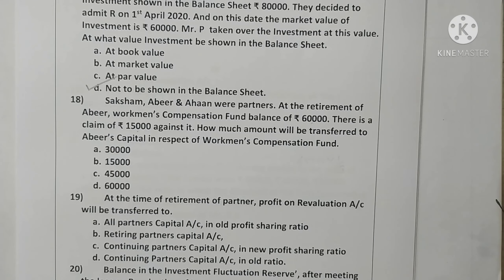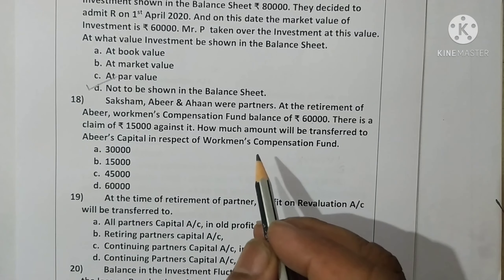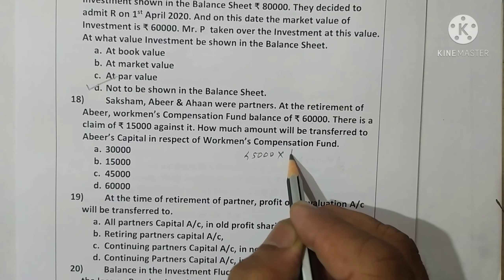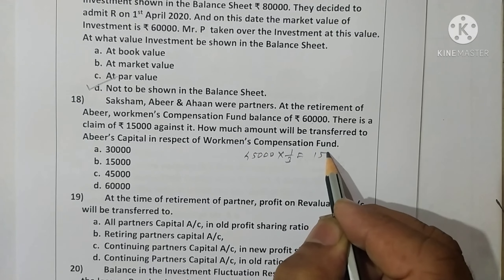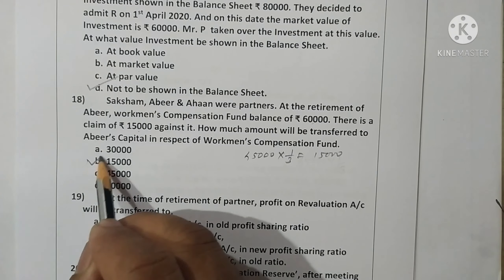Question eighteen: Saksham, Abheer and Ahan were partners. At the time of retirement of Abheer, workman's compensation fund balance is Rs. 60,000; there is a claim of Rs. 15,000 against it. Balance after claim: 60,000 minus 15,000 equals Rs. 45,000. In equal proportion (one-third), Abheer's share is Rs. 15,000. This amount will be transferred to Abheer's capital account. Option B is correct.